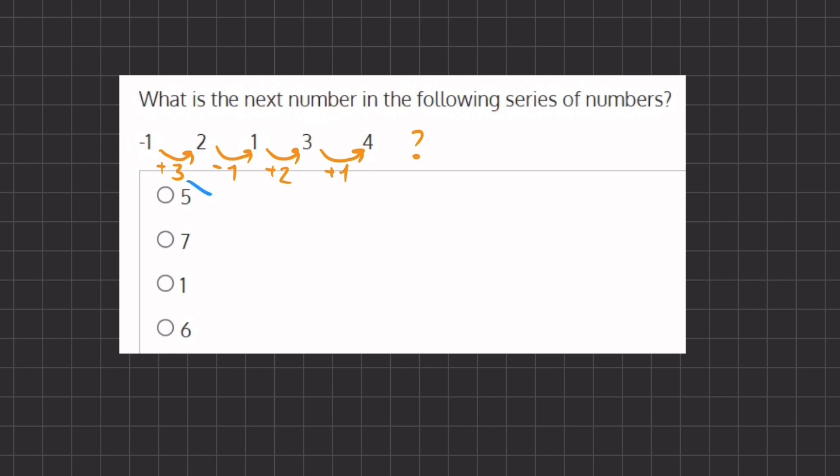but if you can tell that if you add the first two numbers, 3 and negative 1, we get 2. And that is this transition. Now if we add negative 1 and 2, right over here, negative 1 plus 2, we get 1, which is this transition.